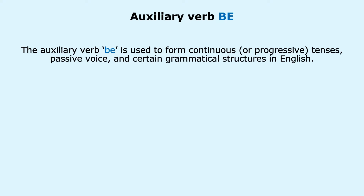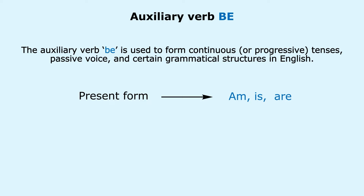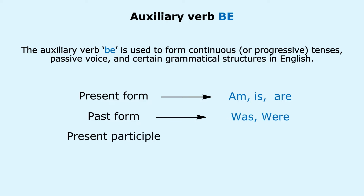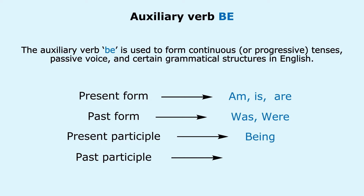The forms of the verb Be are: present form — am, is, are; past form — was, were; present participle — being; past participle — been.